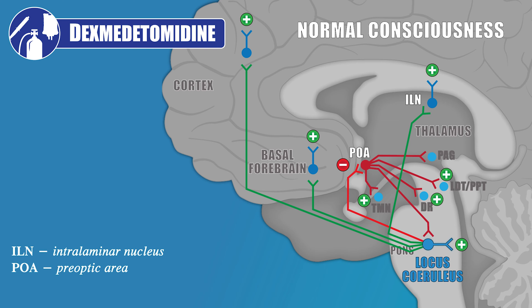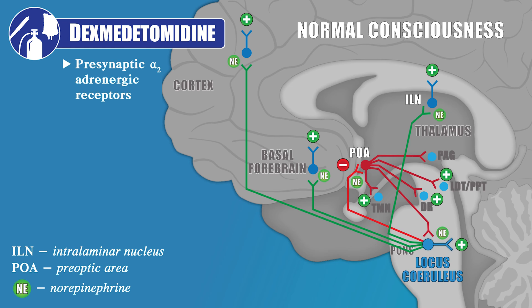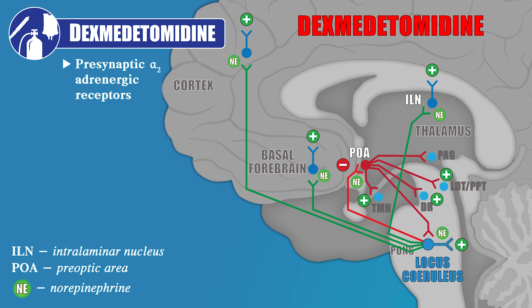The effects of dex on arousal are primarily due to its action on the presynaptic alpha-2 adrenergic receptors of neurons projecting from the locus coeruleus. When dex binds to the alpha-2 adrenergic receptors, it hyperpolarizes the locus coeruleus neurons, which decreases norepinephrine release. This leads to a loss of inhibitory inputs to the preoptic area, which allows the inhibitory projections from the preoptic area to the arousal centers to become highly active in their suppression of activity in the arousal centers. This leads to sedation. Interestingly, this mechanism is also postulated to be an essential part of how non-REM sleep is initiated.